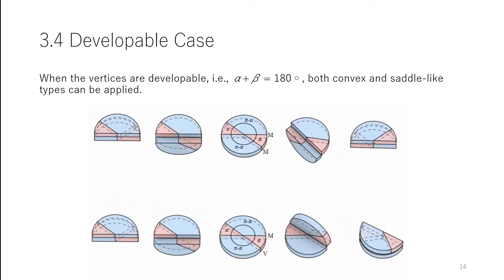When the vertices are developable, both convex and saddle-like types can be applied.